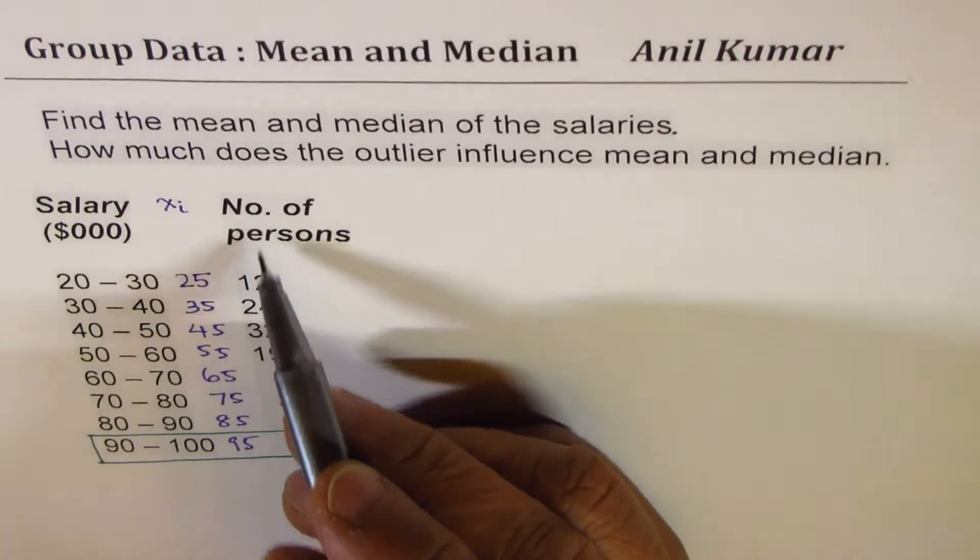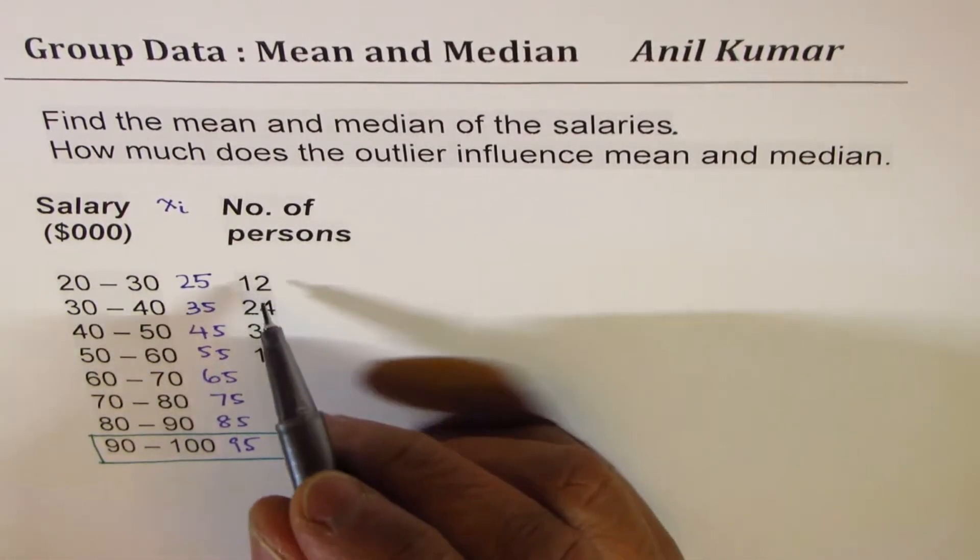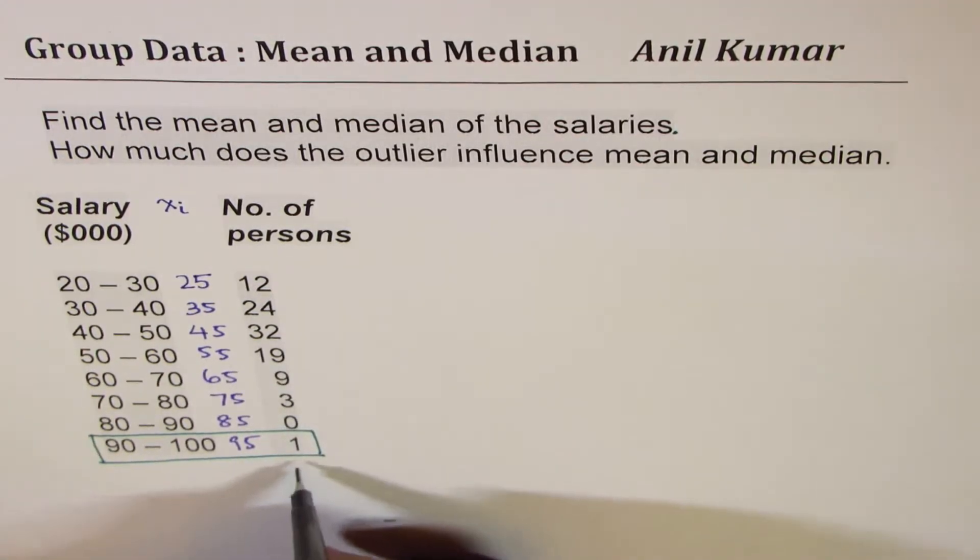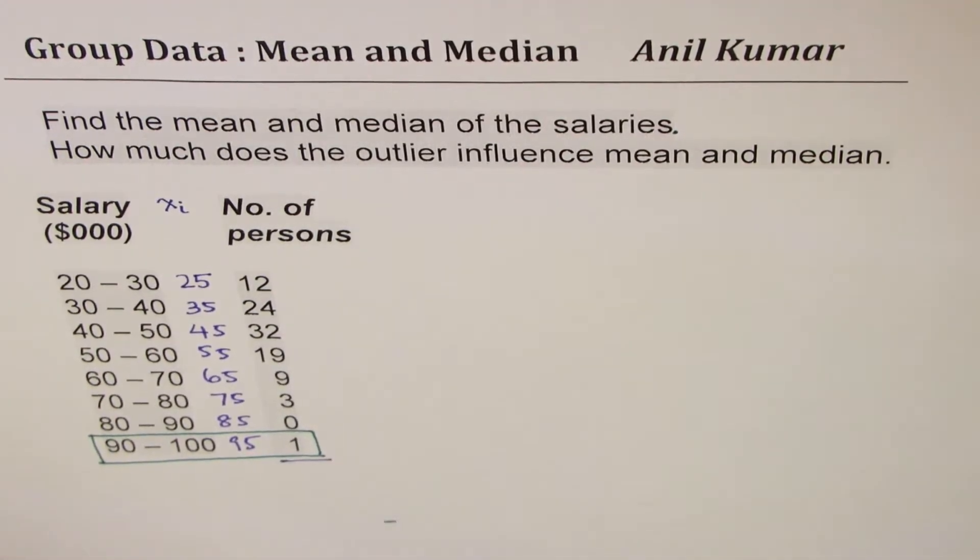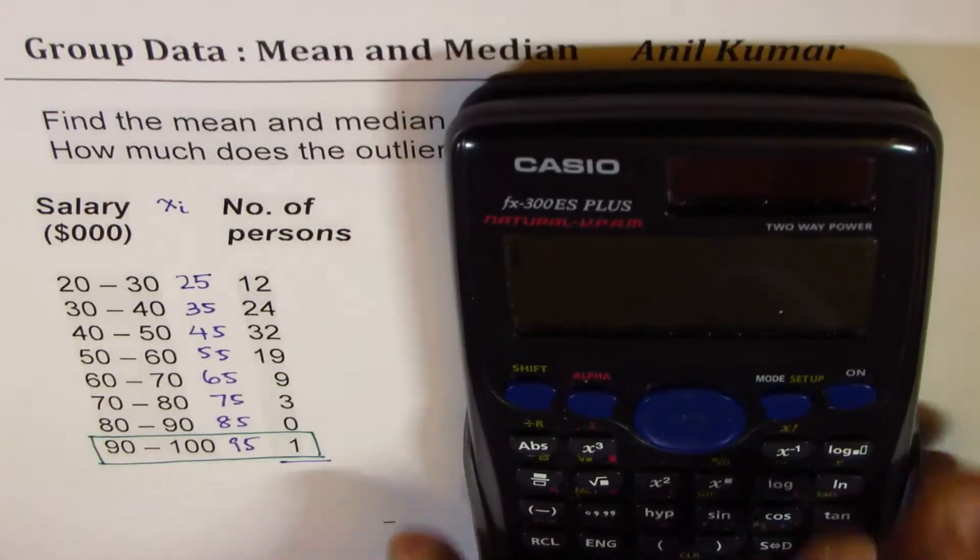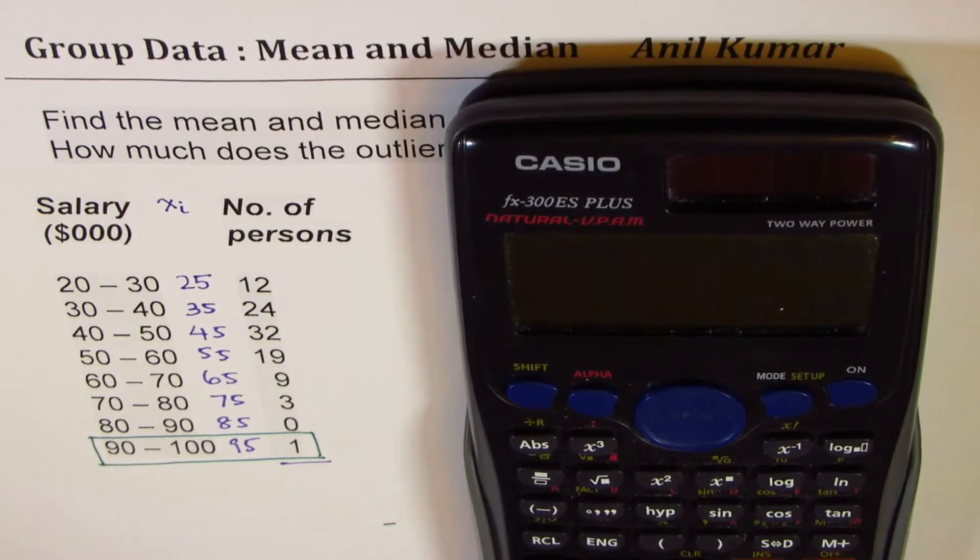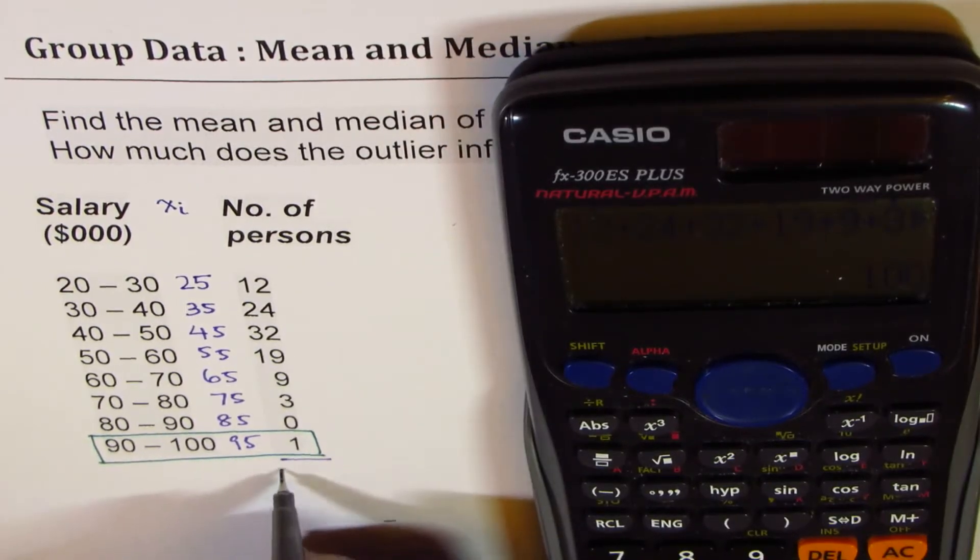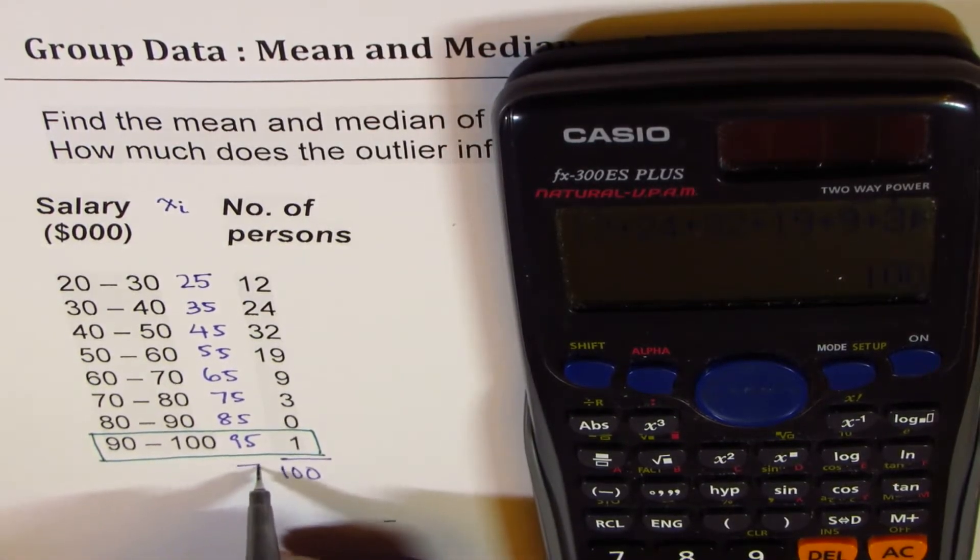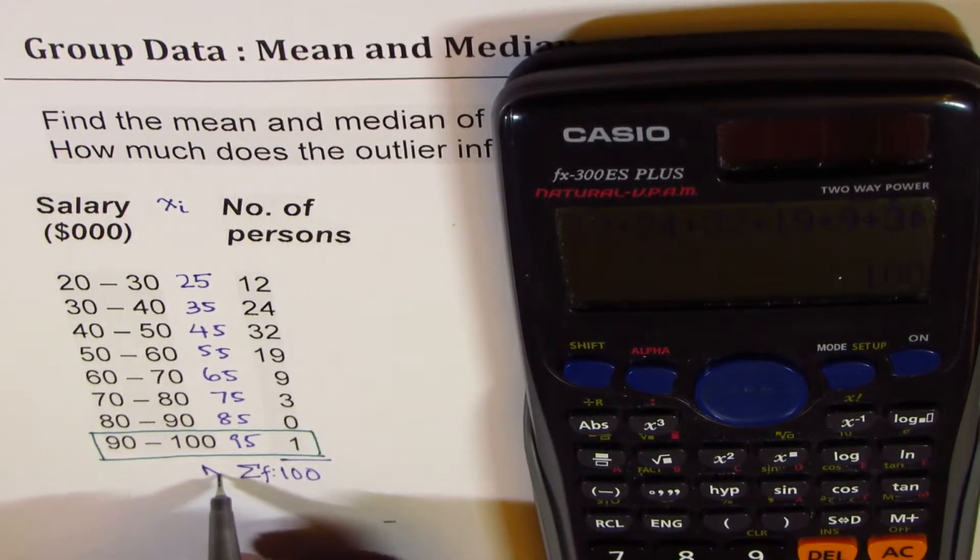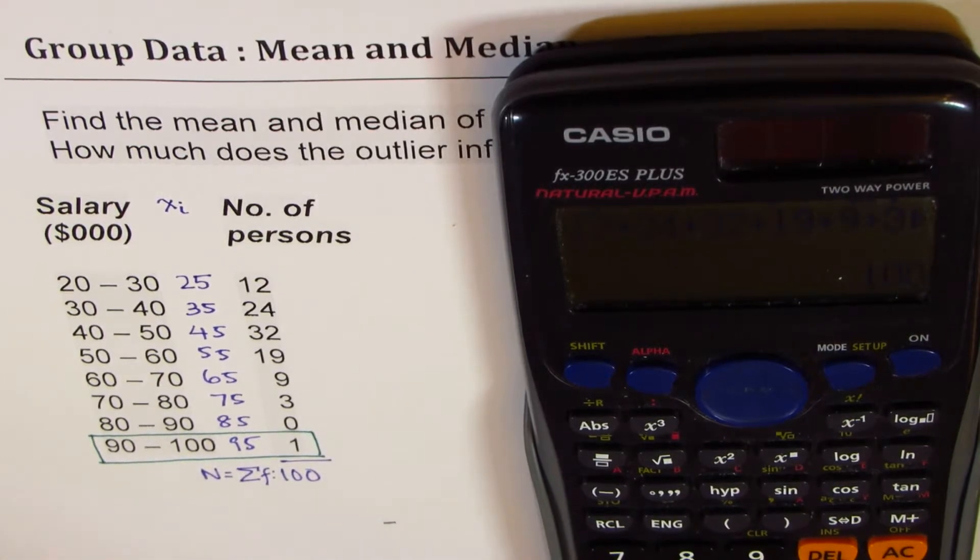That is the frequency for number of persons. We need to find the total of these number of persons. Let's sum this up using a calculator: 12 plus 24 plus 32 plus 19 plus 9 plus 3 plus 1 equals 100. So this totals to 100, the sum of frequencies N, which we will also call the total number of persons. We are going to use this value N for finding the median.